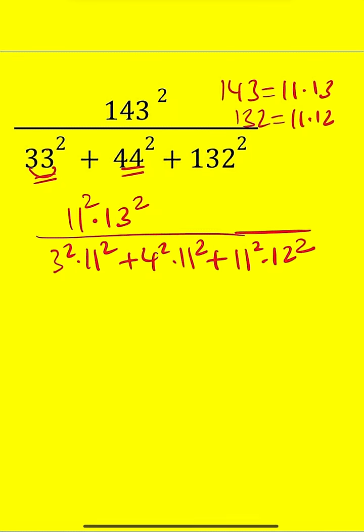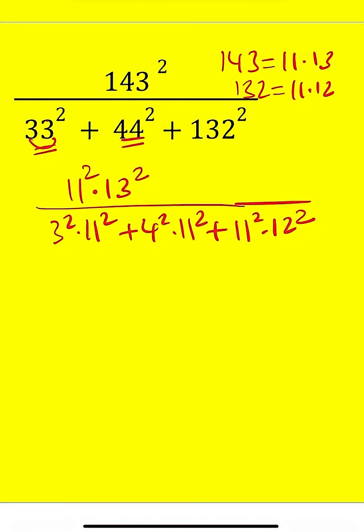So notice that 11 squared is a common factor. So let's go ahead and factor it out in the denominator. And then inside, we're going to have 3 squared, which is 9, and then 4 squared, which is 16. And then we have 12 squared, which is 144.